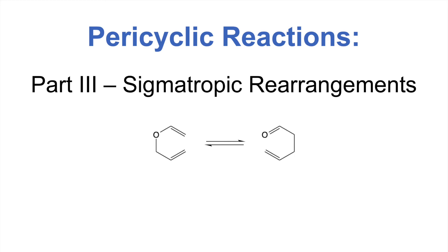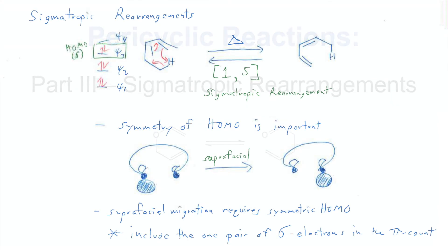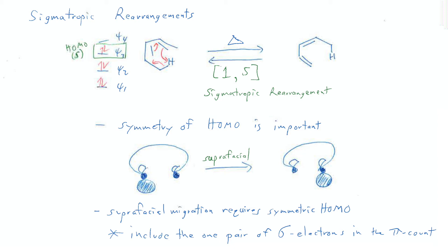Today, we're going to wrap up our look at paracyclic reactions and learn a little bit about sigmatropic rearrangements. A sigmatropic rearrangement is an intramolecular reorganization of electrons. One of the things that sets sigmatropic rearrangements apart from the other types of paracyclic reactions we've covered is that it actually incorporates one sigma bond into the reaction mechanism. That sigma bond may be at the end of the pi system or it may be in the middle of the pi system.